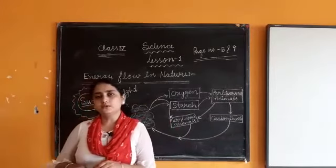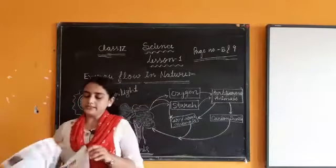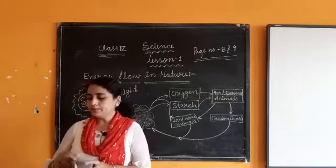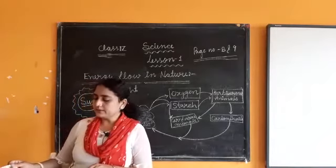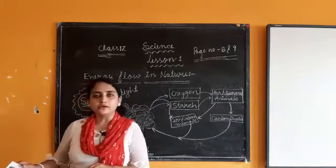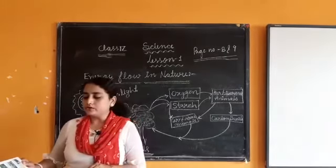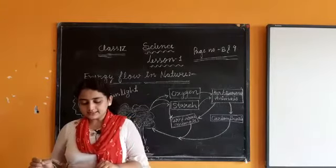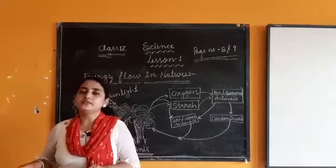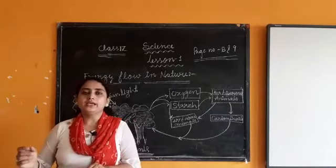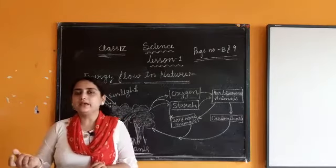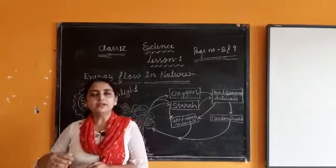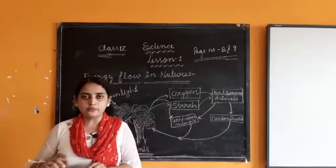Hello students of fourth class, good morning. As you know, we have been discussing our lesson one: Plants, the Food Producer. In our previous videos we already discussed autotrophic and heterotrophic organisms, autotrophic and heterotrophic modes of nutrition, the process of photosynthesis, and the stored food in the form of starch. We have already known that many organisms on earth are autotrophic or heterotrophic.